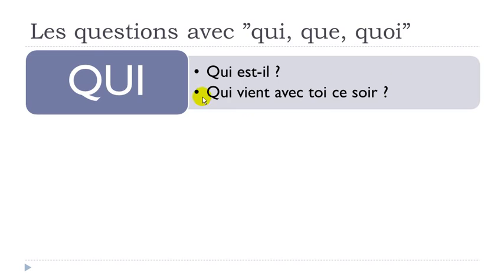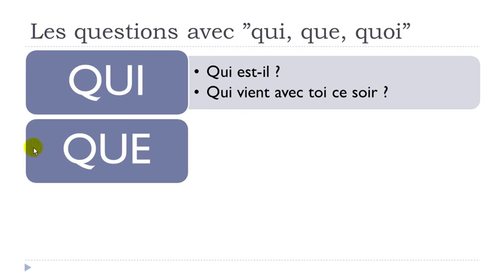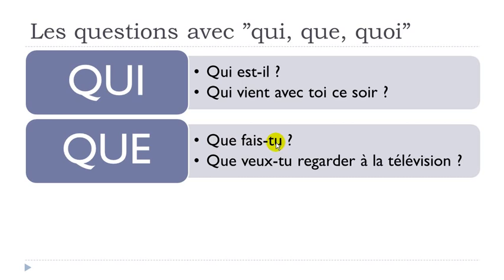Second one is QUE — QUI means WHO, QUE means WHAT. Let's see two examples. QUE FAIS-TU? FAIS is coming from FAIRE, which means to do. So what are you doing? What do you do? QUE FAIS-TU? Remember, you start a question with QUE and then you change the order, putting the subject after the verb.